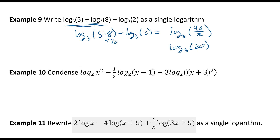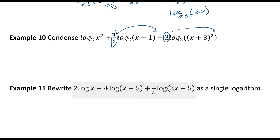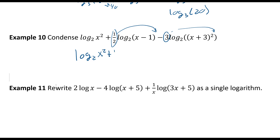The next one is: log base 2 of x squared, plus one-half log base 2 of x minus 1, minus 3 log base 2 of x plus 3 squared. Applying the power property, the coefficients become exponents: log base 2 of x squared, plus log base 2 of x minus 1 to the one-half, minus log base 2 of x plus 3 squared.